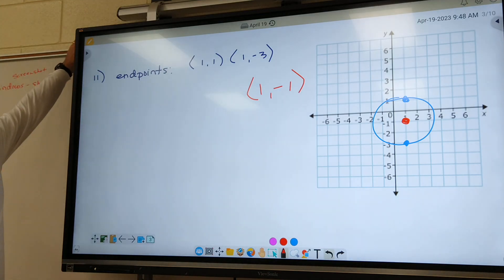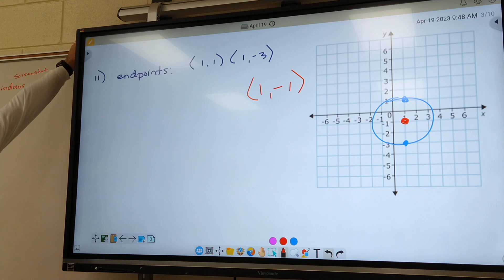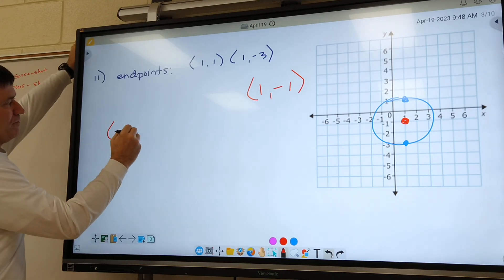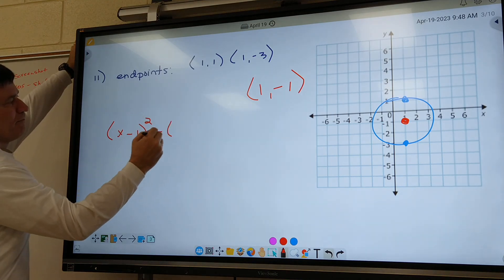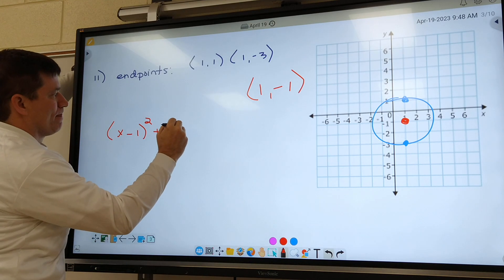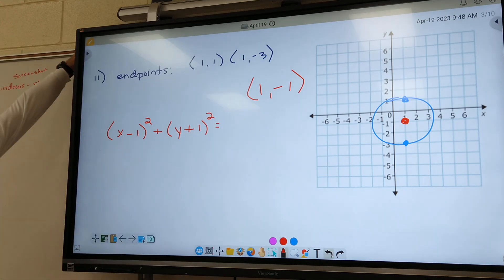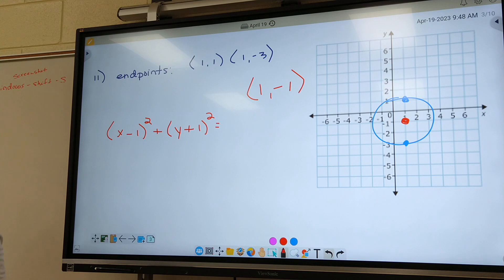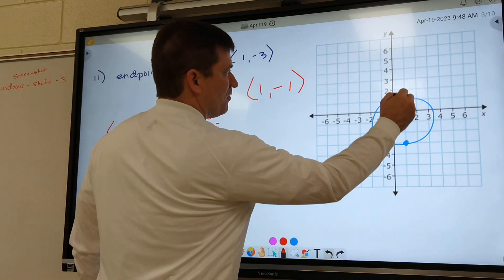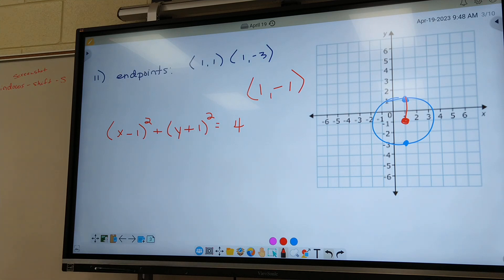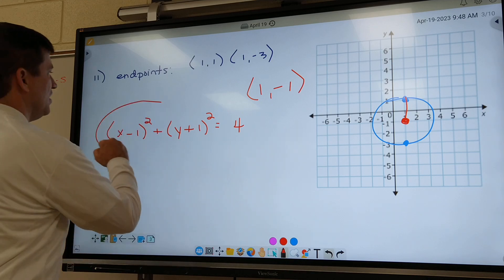Harlan, what's my equation going to be? Go ahead and start it for me. Keep going. Good. Don't forget your squares. Now Harlan, how do we figure out what number goes on the right side? Good. You count from here to here. It's 2. 2 squared is 4. That's 11.